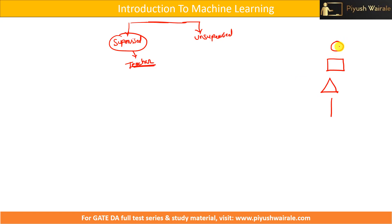When we are in first standard or nursery, such types of questions were there: this is a circle, this is a square, this is a triangle, this is a line. Our teacher taught us to recognize these shapes.